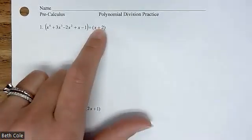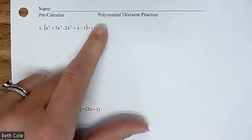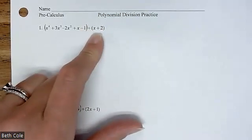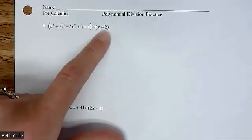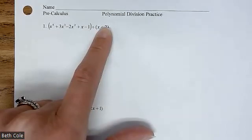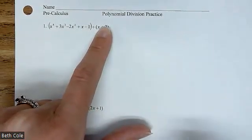Hey guys, look right here. Do you remember what this part's called? If not, I'll remind you. You can see the D. This is the dividend. This is the divisor. What will make the divisor zero? That's the question.